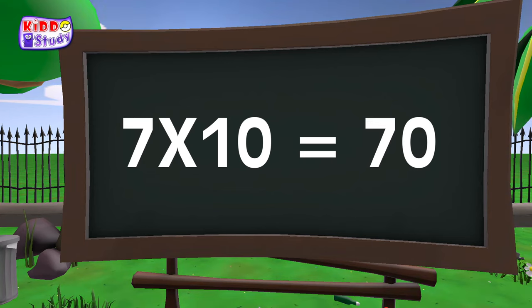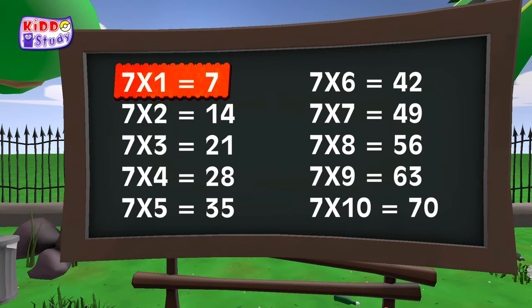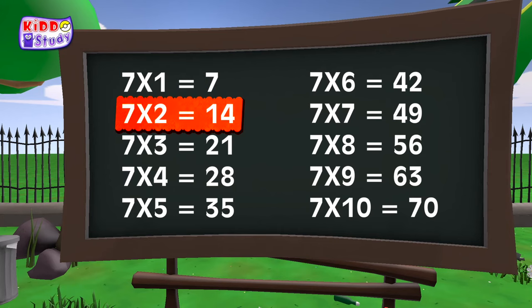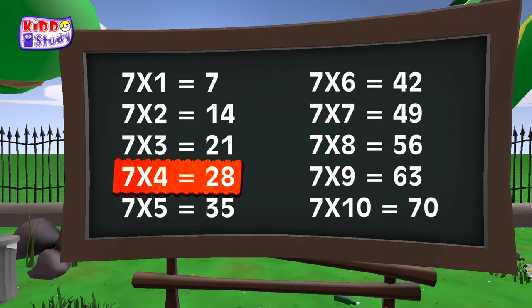Once again children: 7 ones are 7. 7 twos are 14. 7 threes are 21.